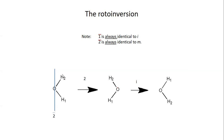For instance, we know that in a water molecule, H2O, we have a mirror plane that bisects the water molecule. As we carry out that symmetry operation, H2 and H1 swap their positions, while the oxygen stays at its position.